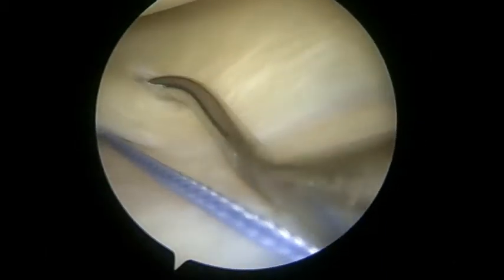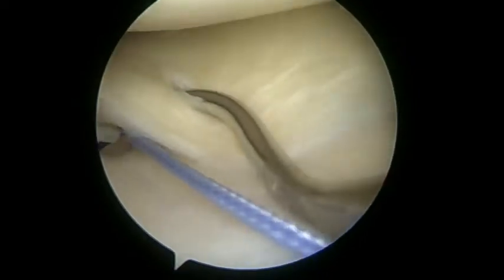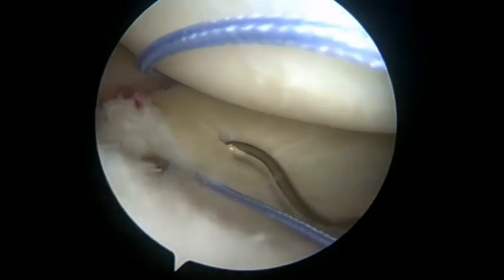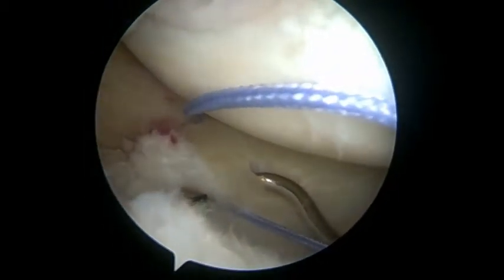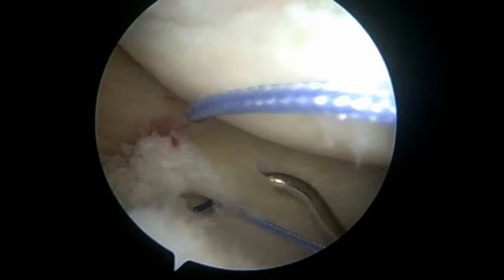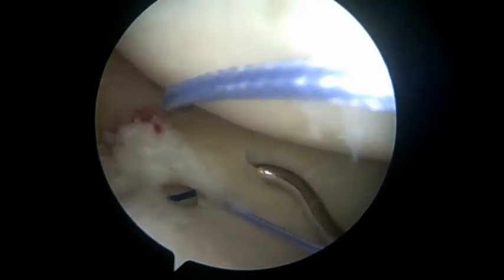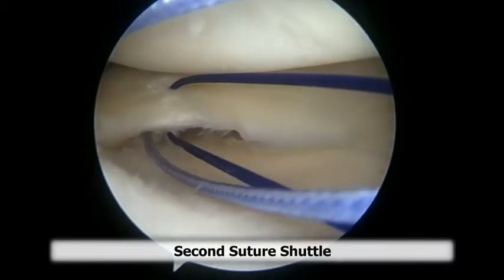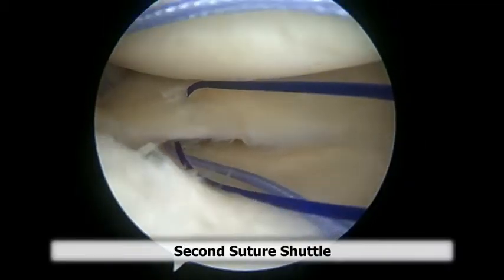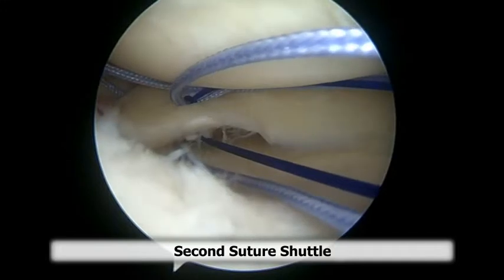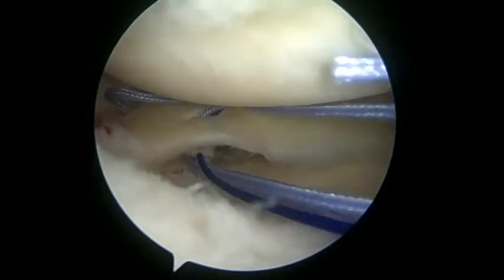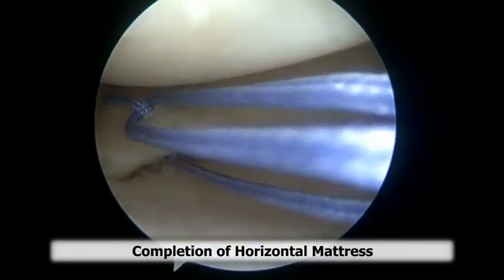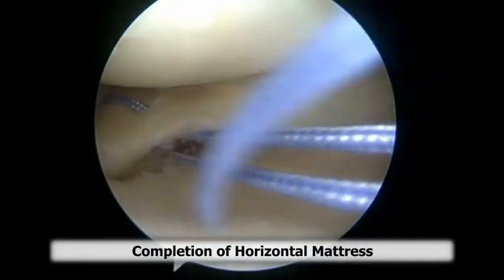We then prepare to create our horizontal mattress by shuttling a PDS through the meniscus more centrally. This is then grasped and pulled out of the medial portal similar to the first PDS. The superior limb of the PDS is tied around the superior limb of the suture, and we pull on the inferior limb of the PDS, bringing a horizontal mattress stitch through the meniscus.